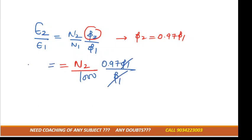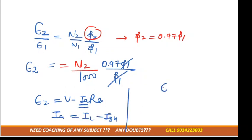We have calculated E2 value by the formula V minus Ia Ra. Ia is different. Ia is equal to IL minus Ish for no load, and E is equal to V minus Ia Ra. Again, this Ia would be different because of the load current.